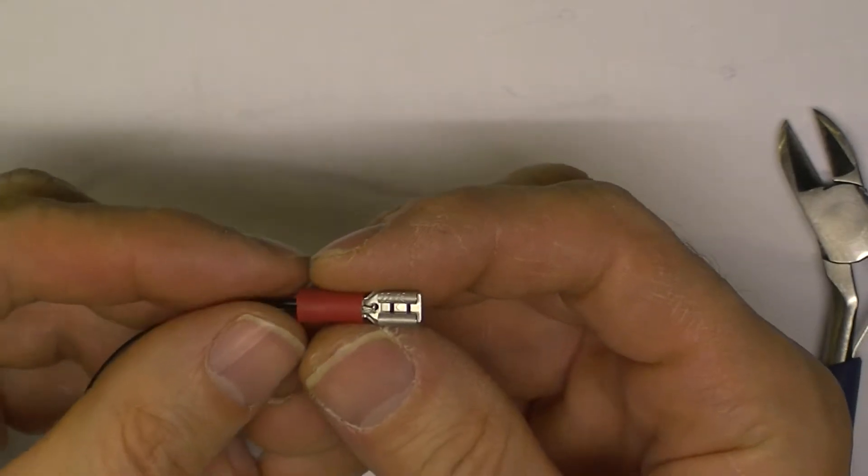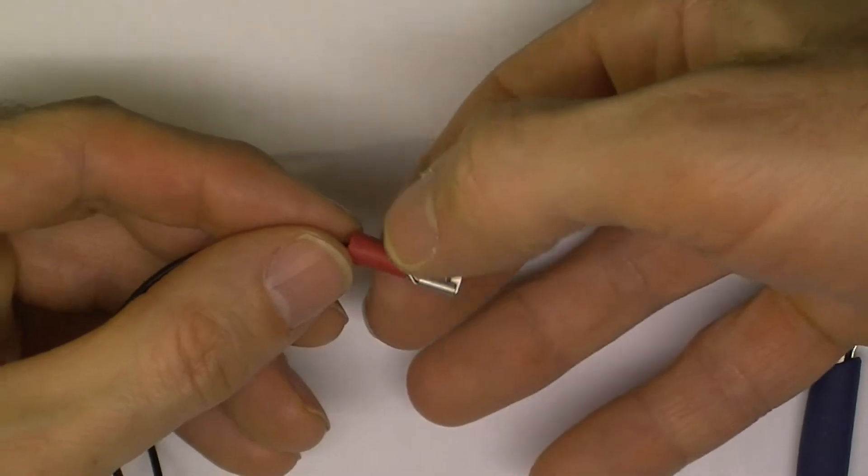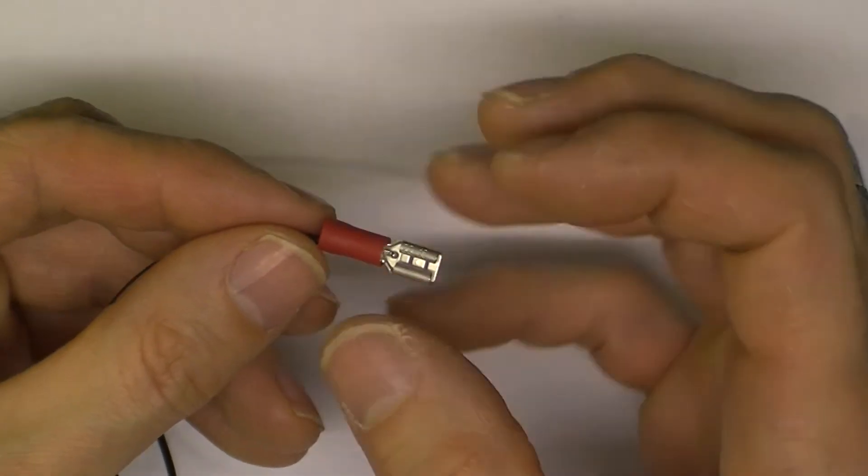It's got to be in there sufficient when we actually crimp this down, so that's just going to be squeezing down on that so it firmly holds on it.